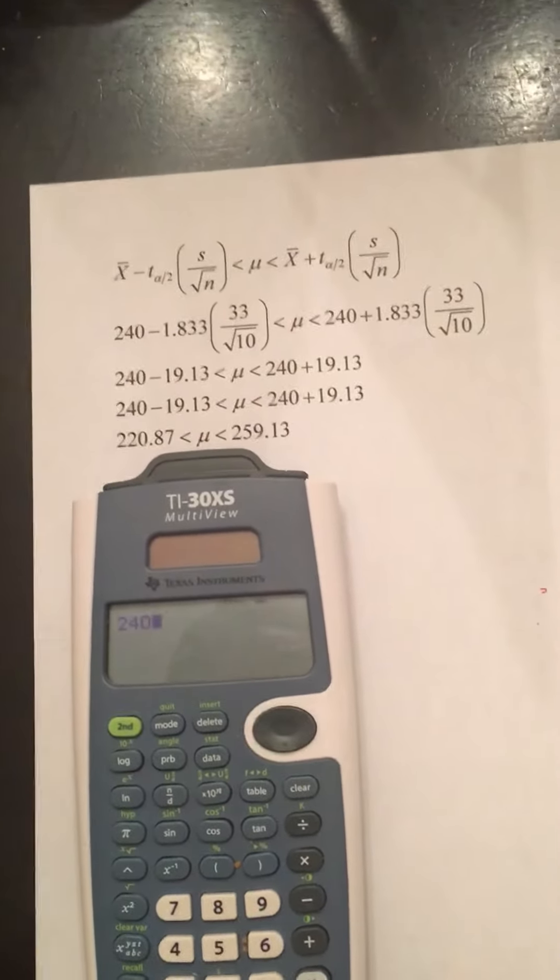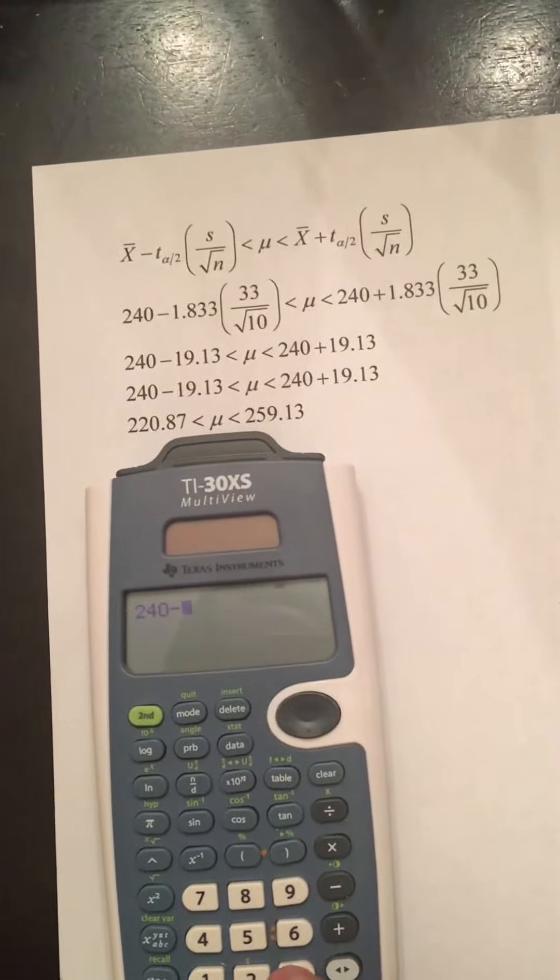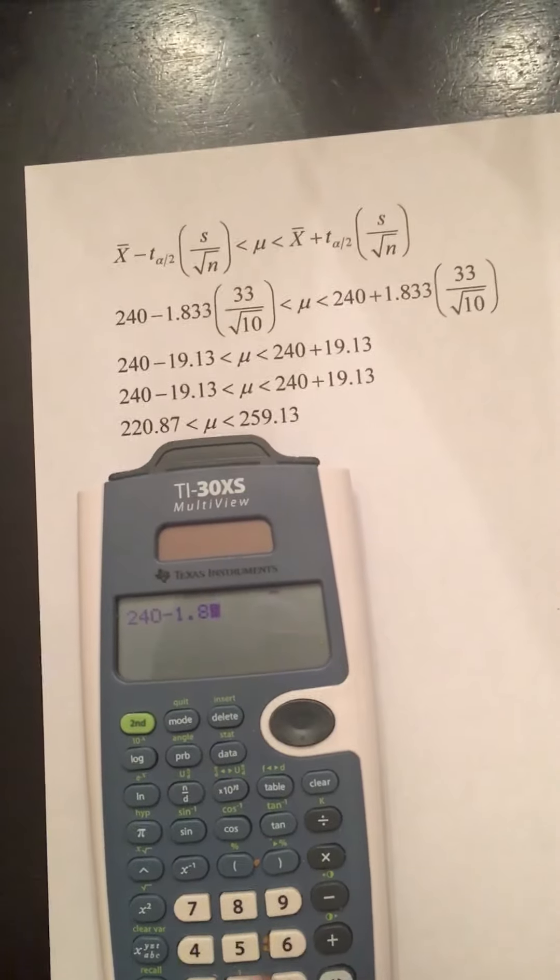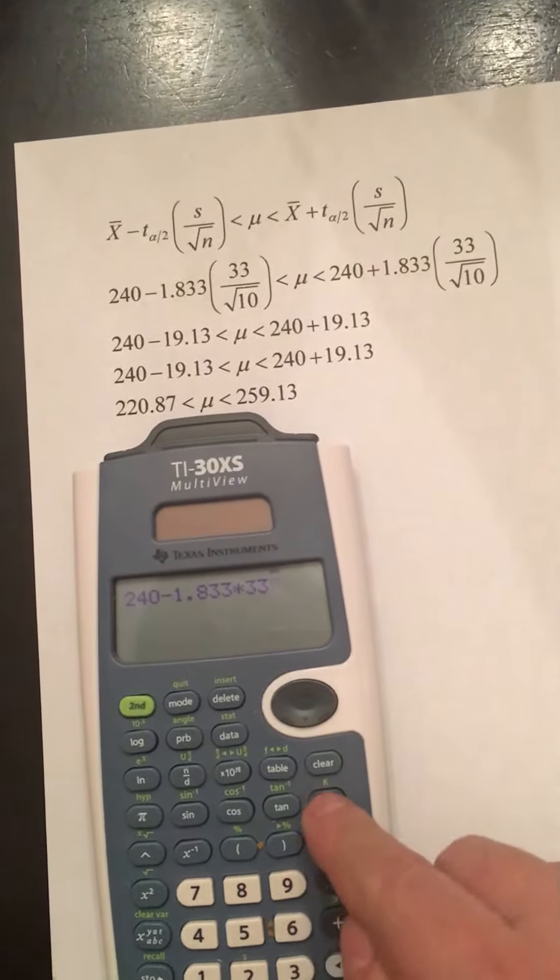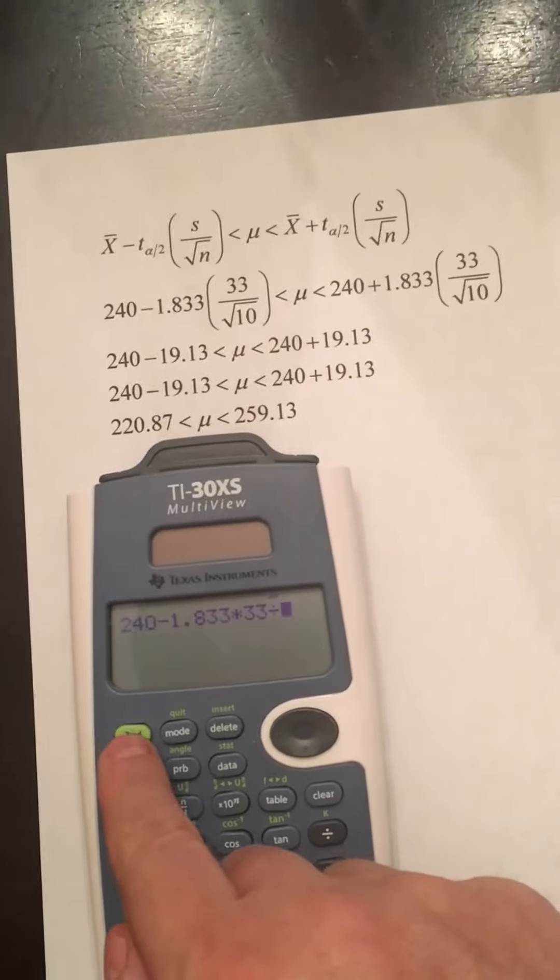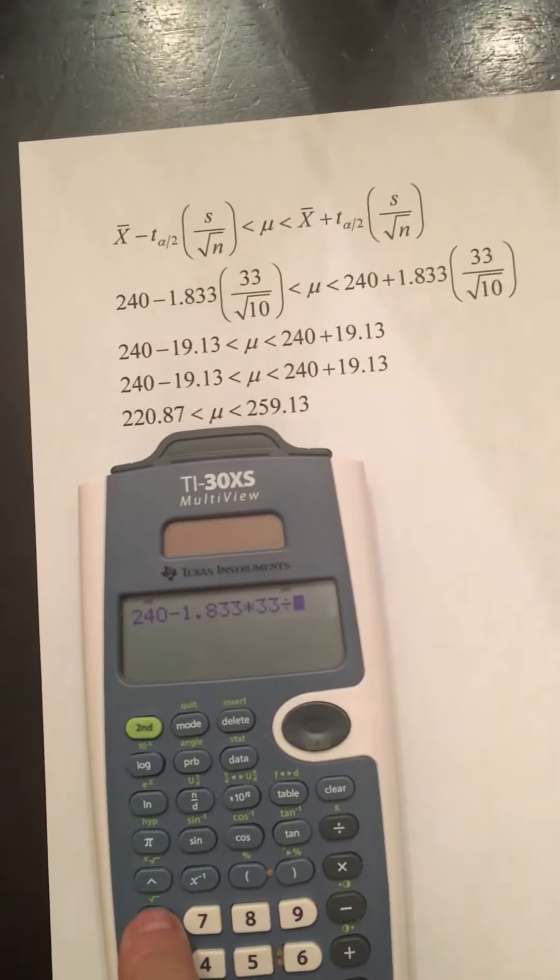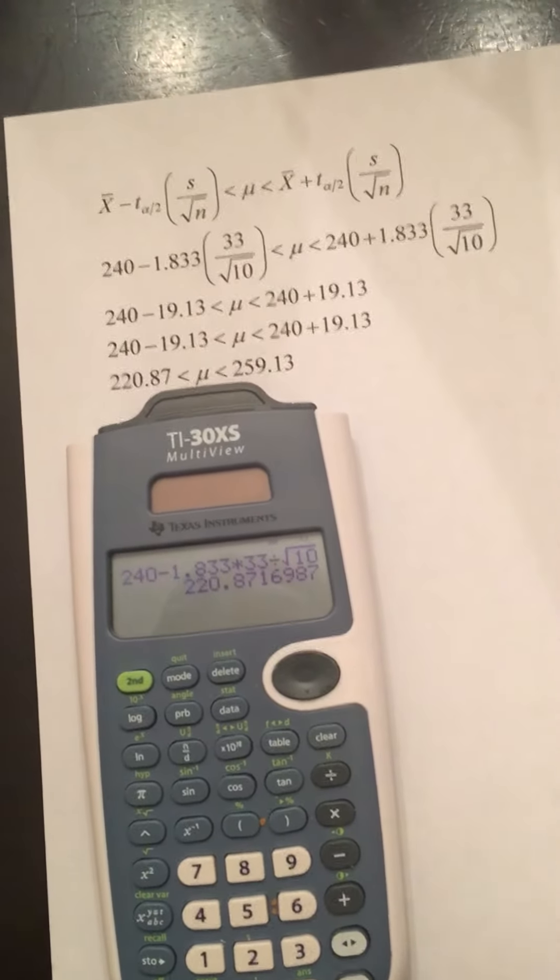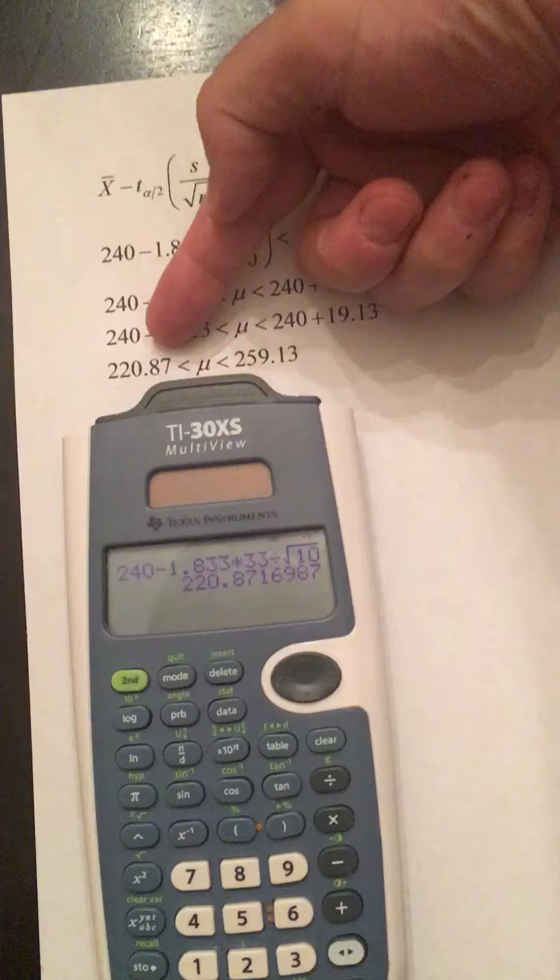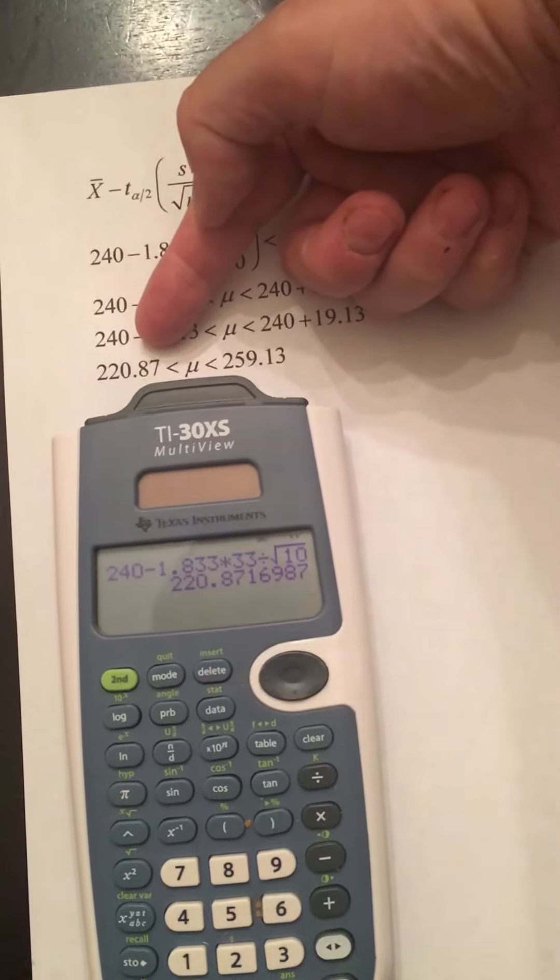So we have 240 minus 1.833 times 33 divided by, and you have to use second, and your square root is right there, square root of 10. Hit enter, and you have your left endpoint, 220. We rounded two places, 0.87.